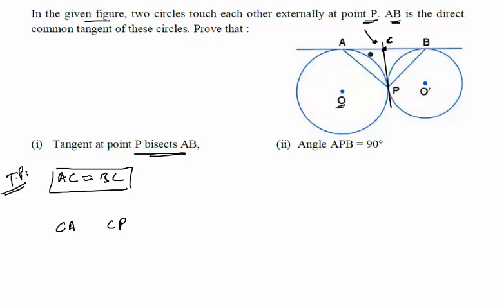These are originating from the same point, so we can apply the theorem that tangents from an external point are of equal length. This gives us that CA is equal to CP.